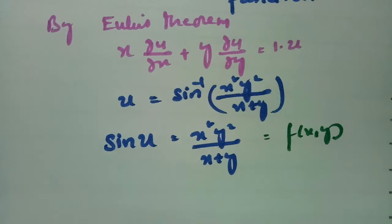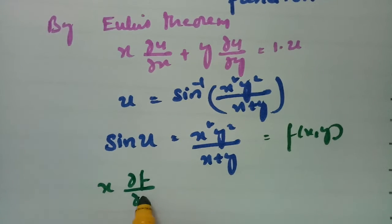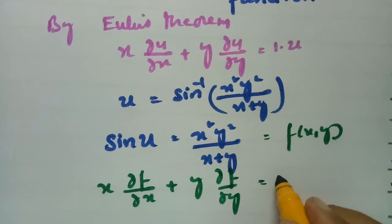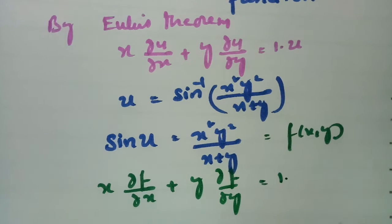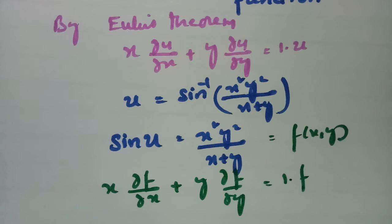Now according to Euler's theorem, x·∂f/∂x + y·∂f/∂y = n·f. The degree here is 1, so it equals 1 times f.